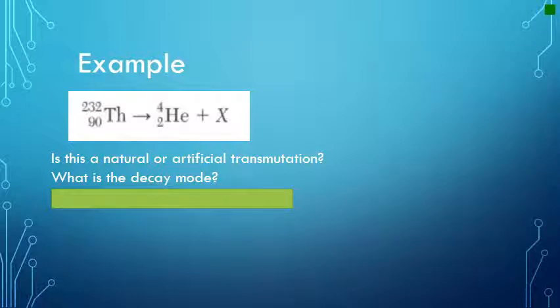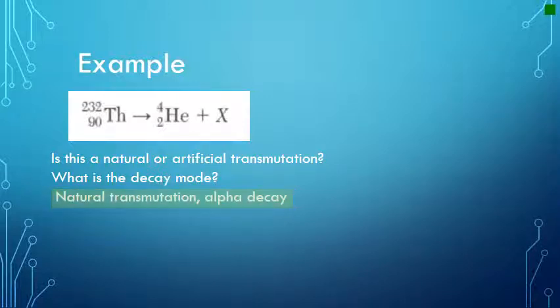Let's look at an example. Is this a natural or artificial transmutation? What is the decay mode? Pause here and try to find the answer. You should have found the answer to be natural transmutation and alpha decay. There is only one reactant, so this is a natural transmutation. And one of the products is an alpha particle, so this is alpha decay.